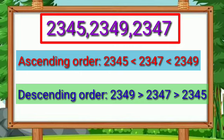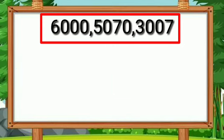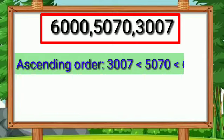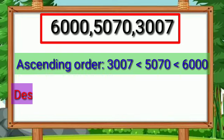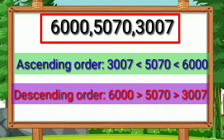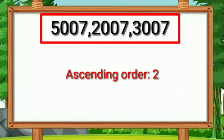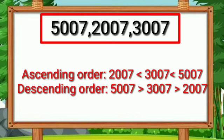Next, numbers are 6,000, 5,070, and 3,007. Let's arrange in ascending order: 3,007 is smaller than 5,070 and 5,070 is smaller than 6,000. In descending order: 6,000 is greater than 5,070 and 5,070 is greater than 3,007. Thank you.